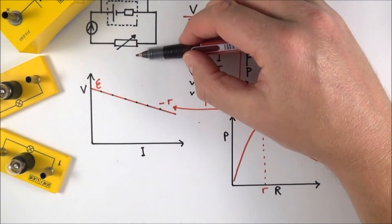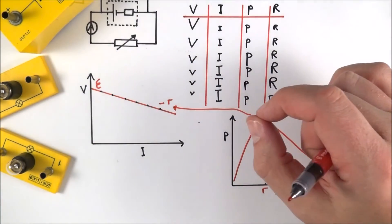When the resistance of the load is equal to the internal resistance, that's when theory suggests you should get maximum power.